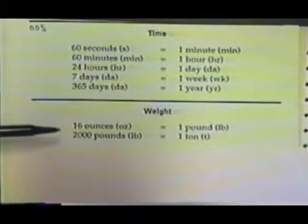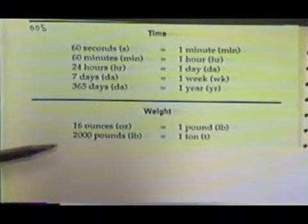With weight, we'll use the fact that 16 ounces equals 1 pound, and 2,000 pounds equals 1 ton.